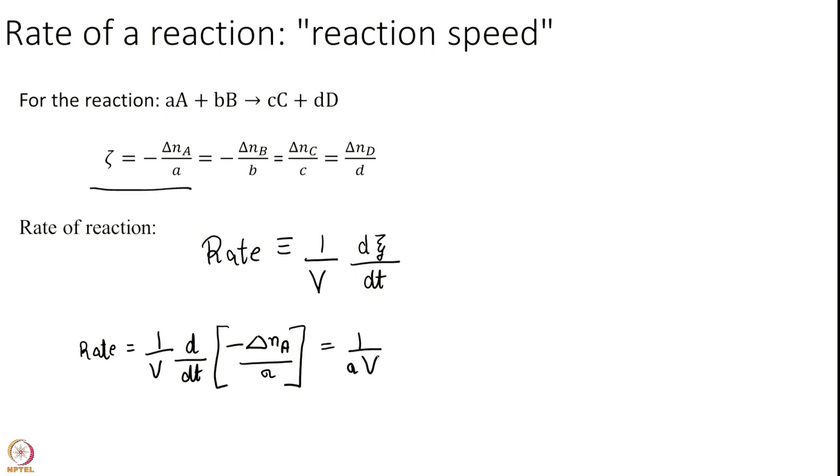I will take a outside and what is the definition of delta NA, it is NA minus NA naught. So, this is equal to 1 over aV minus dNA over dt plus dNA naught over dt.